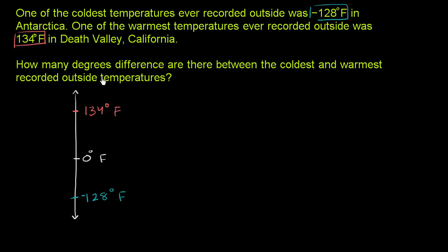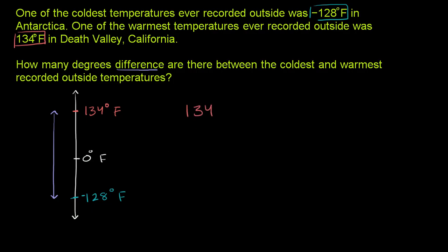When they ask how many degrees difference there are between the coldest and the warmest, they're essentially asking: what is this distance between the coldest and the warmest? You could say, if I started at the coldest temperature and wanted to go all the way up to the warmest, how much would I have to add? Or you could take the larger number, 134, and subtract the smaller number, which is negative 128. This is positive because we're subtracting the smaller one from the larger one.